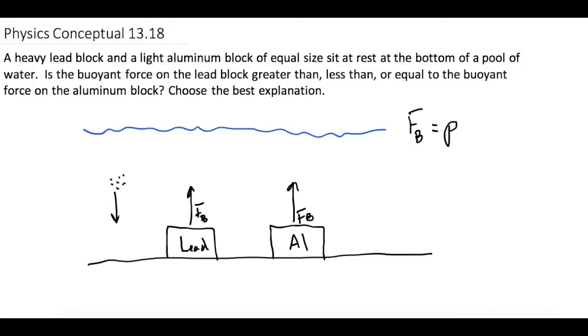It's the density of water times gravity times the volume of water that we're dispersing. So even though the lead is way more dense, all we care about is the density of the water itself, which of course is the same. Gravity, of course, isn't changing and their volumes are identical as well.